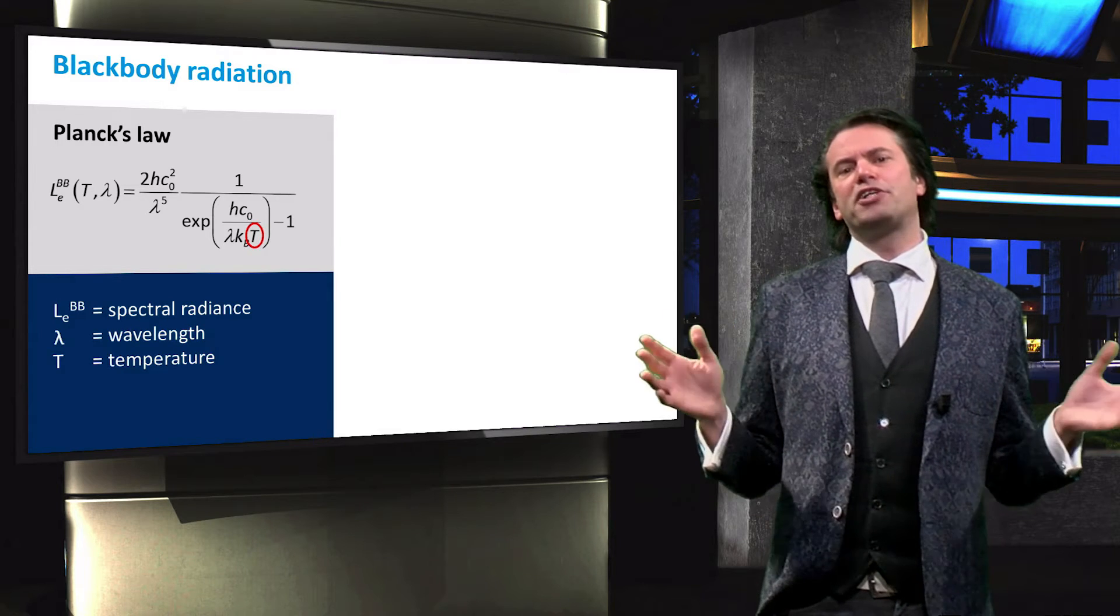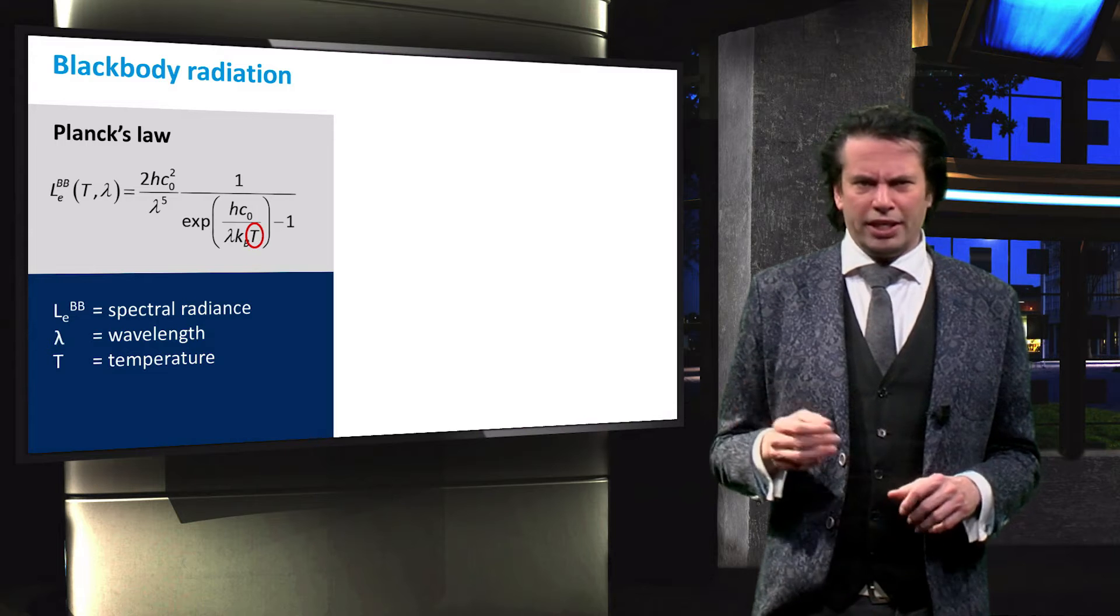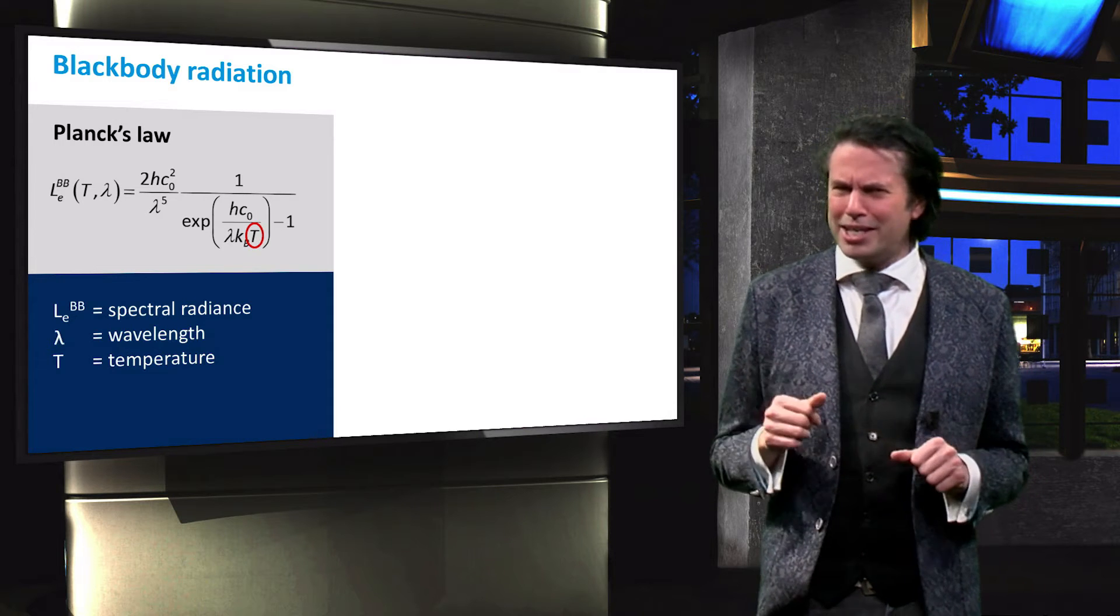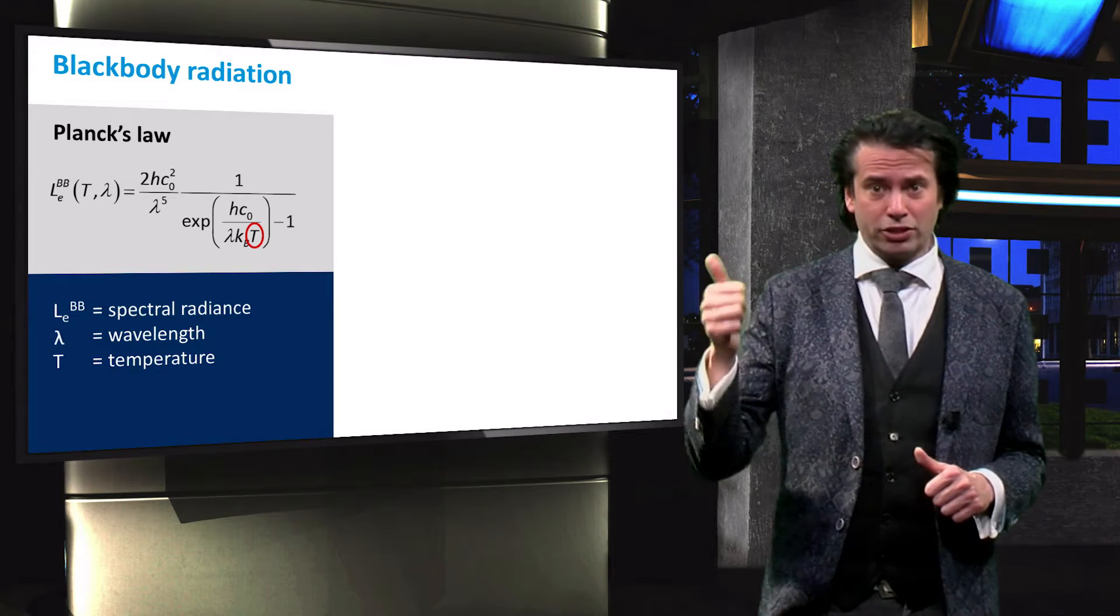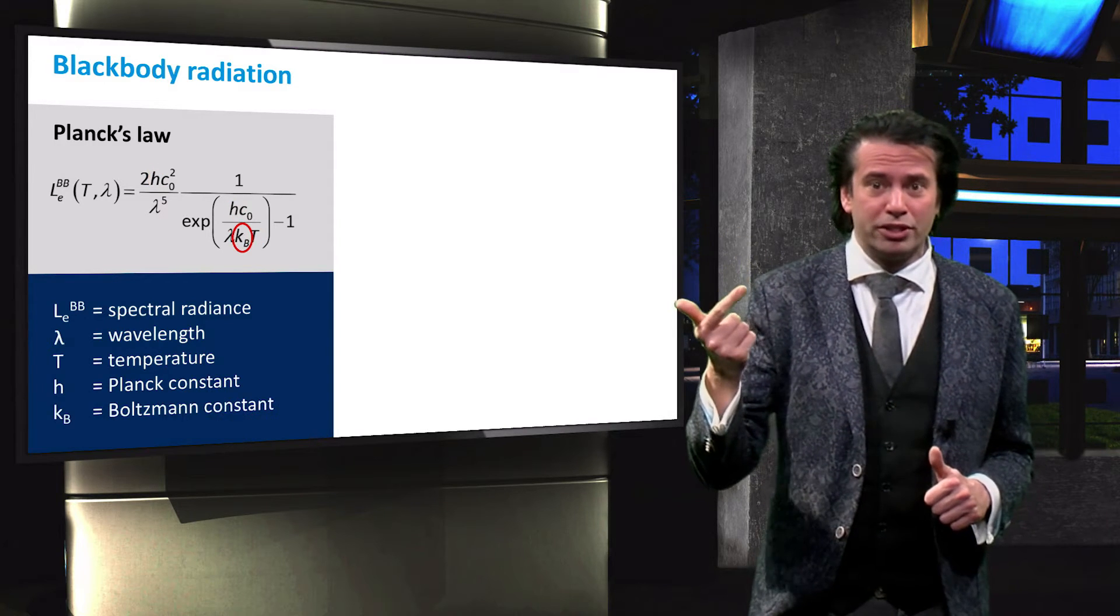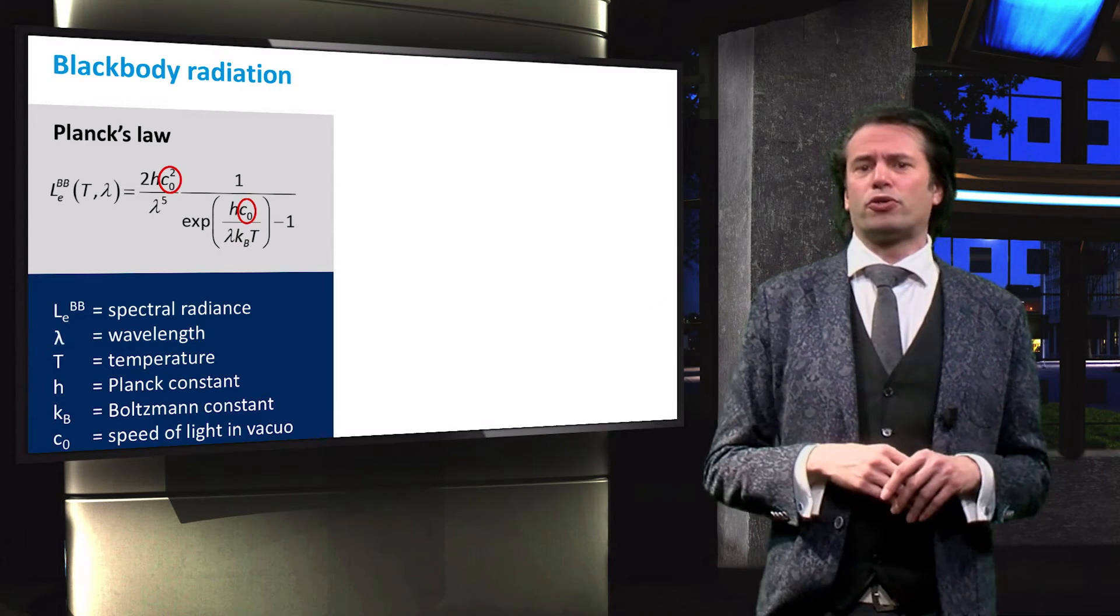The spectral radiance of a black body is a function of only its temperature, T. It is remarkable to see that Planck's law contains three fundamental constants: Planck's constant, Boltzmann's constant, and the speed of light in vacuum, which are among the most important constants in physics.